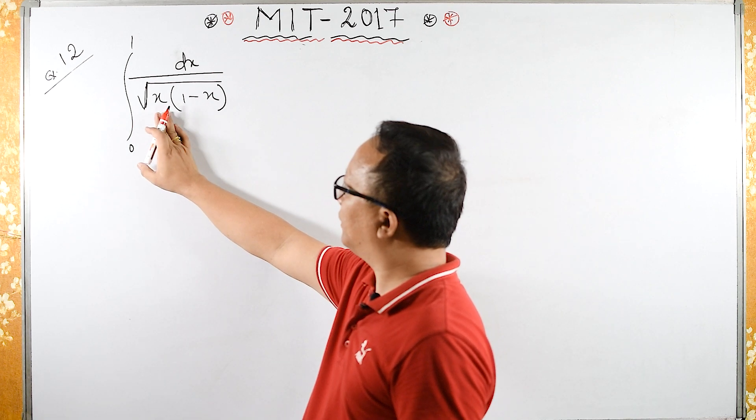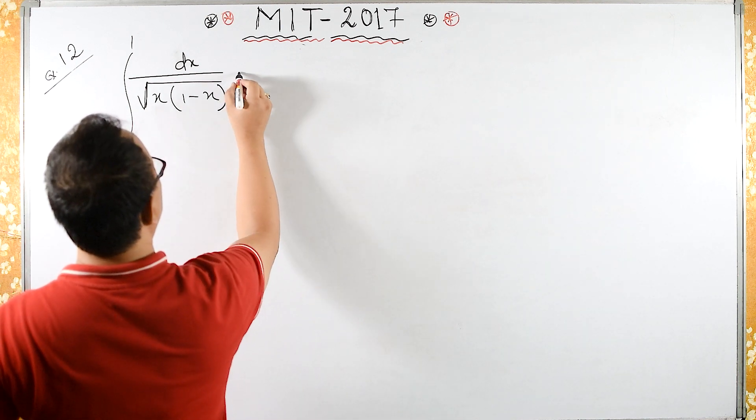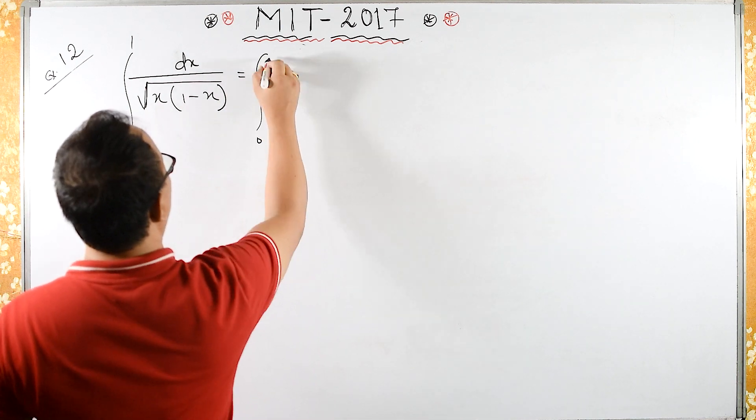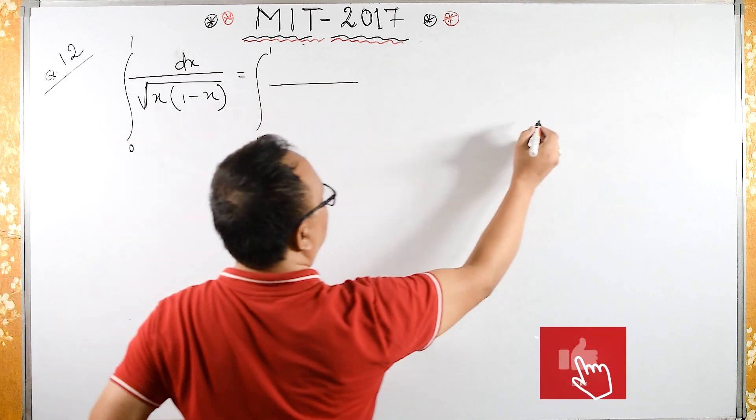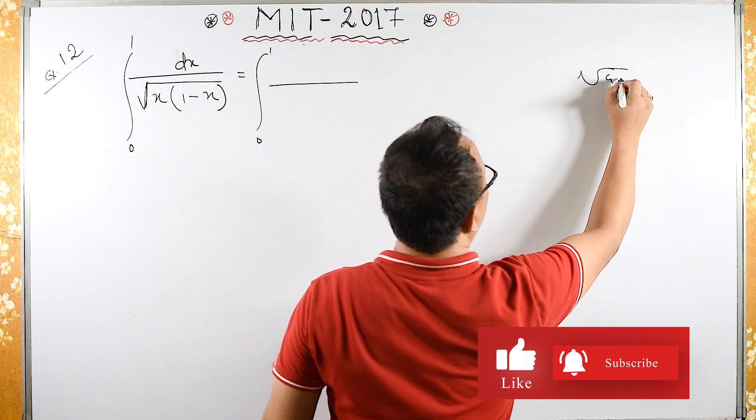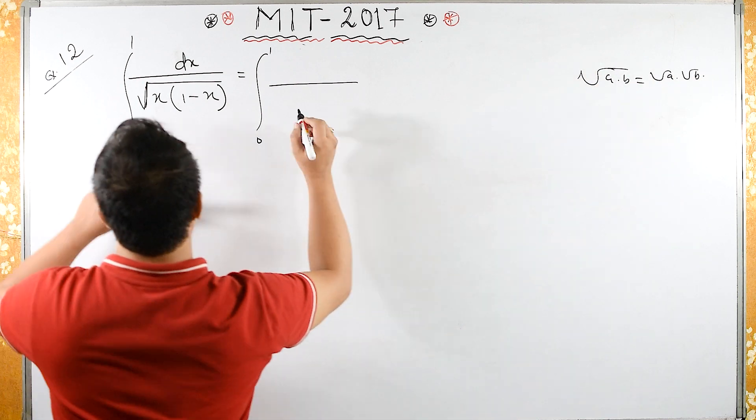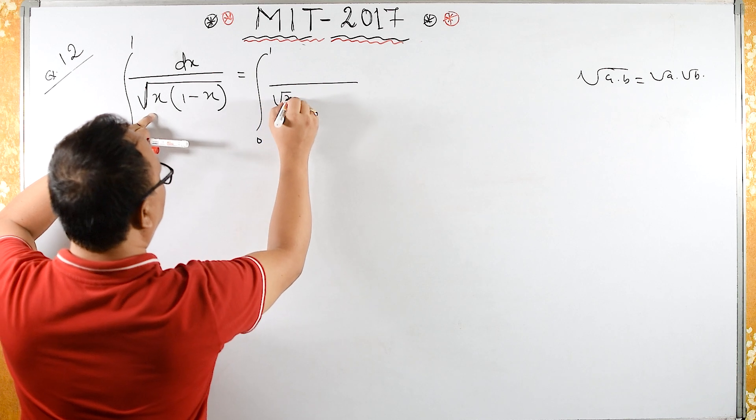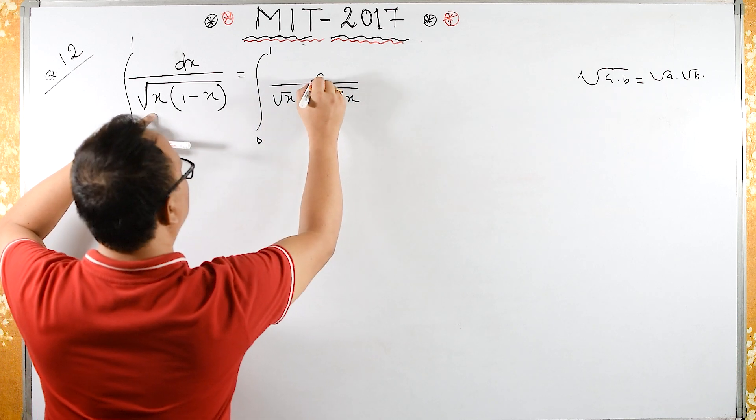I will separate this square root of x. So this is equal to integral from 0 to 1. I will separate this because square root of a times b is the same as square root of a times square root of b. So square root of x times square root of 1 minus x dx.